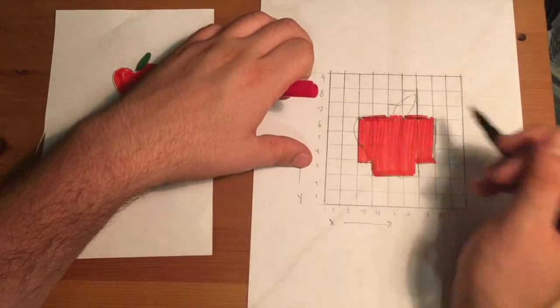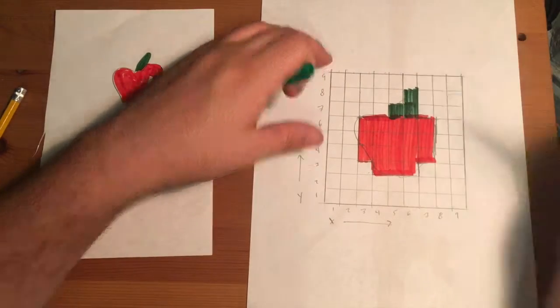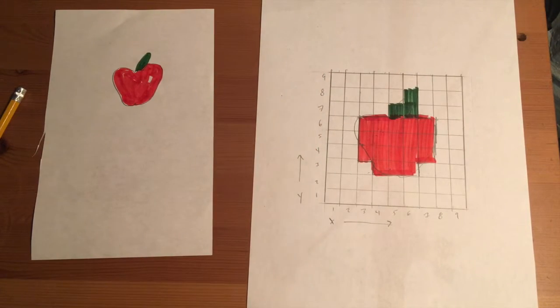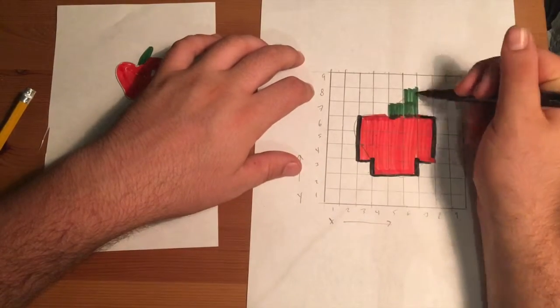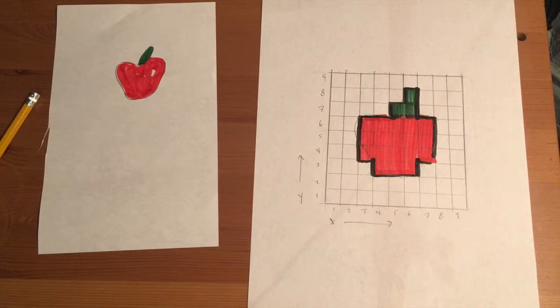So once I'm done blocking it out, then I'm ready to take my markers and shade in my boxes, starting with one color and then the other color.